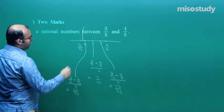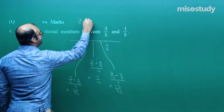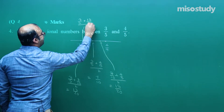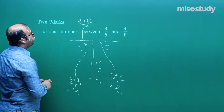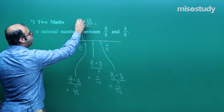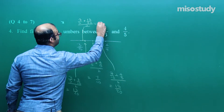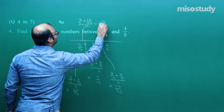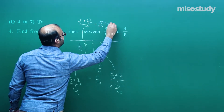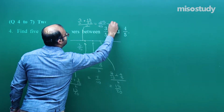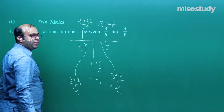For the fourth rational number, we take the average of 3/5 and 13/20: (3/5 + 13/20) / 2 = (12 + 13) / 40 = 25/40, which simplifies to 5/8.